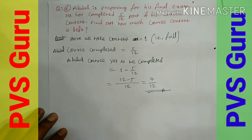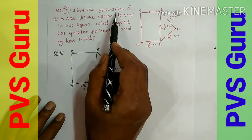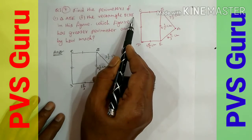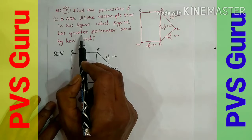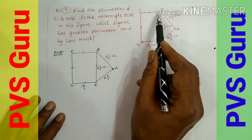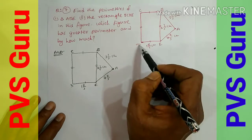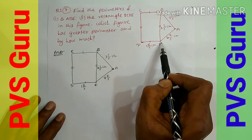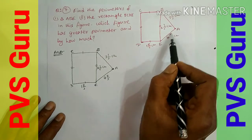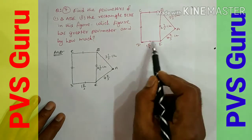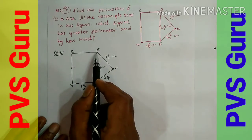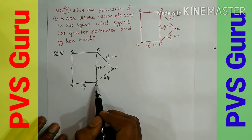Question number 7: Find the perimeter of triangle ABE and rectangle BCDE as shown in the figure. Which figure has a greater perimeter, and by how much? In the diagram, there is a rectangle BCDE and a triangle ABE. We need to calculate the perimeter of both.